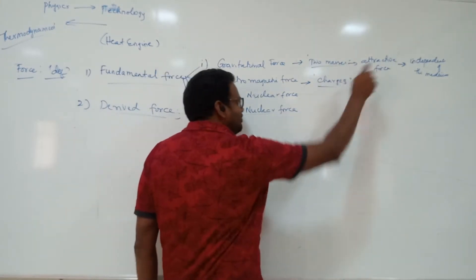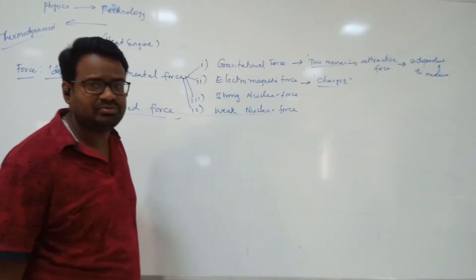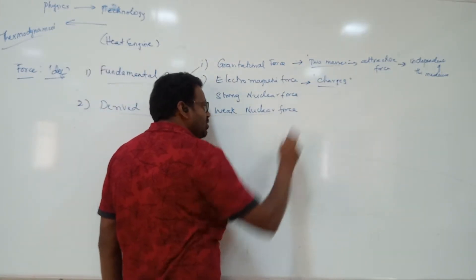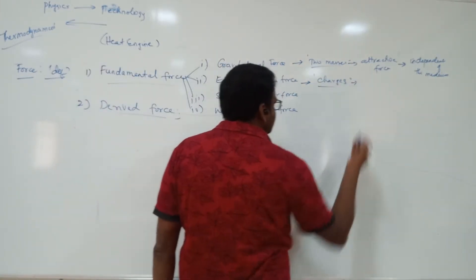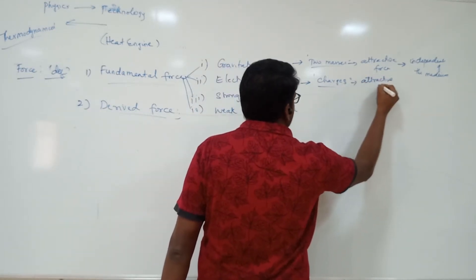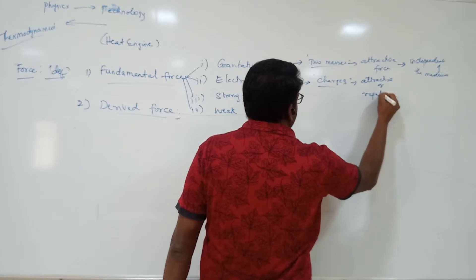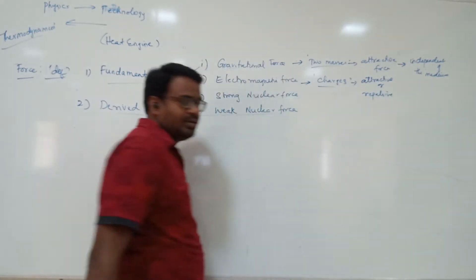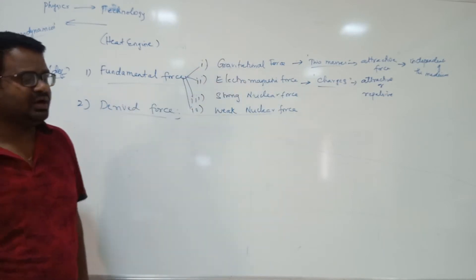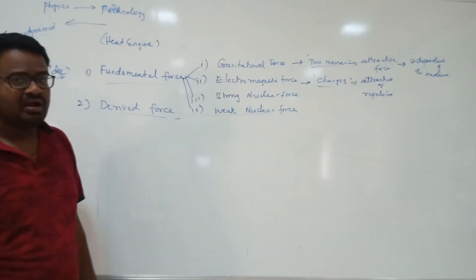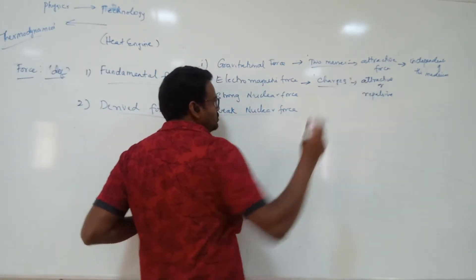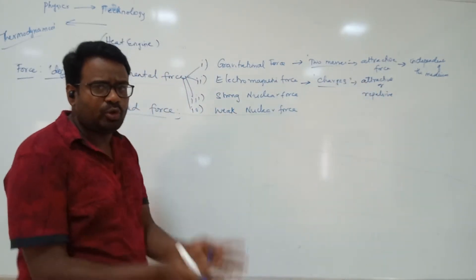When some kind of charges are involved, can we get a type of force? Yes. When you are dealing with positive and negative kinds of things, there are two kinds of forces possible: either it could be an attractive force or it could be a repulsive force. Electromagnetic force is related to charges, and it can be either attractive or repulsive.